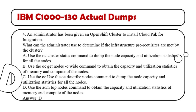A. Use the OC cluster status command to dump the node capacity and utilization statistics for all the nodes. B. Use the OC get nodes -o wide command to obtain the capacity and utilization statistics of memory and compute of the nodes. C. Use the OC describe nodes command to dump the node capacity and utilization statistics for all the nodes.